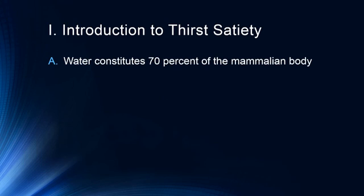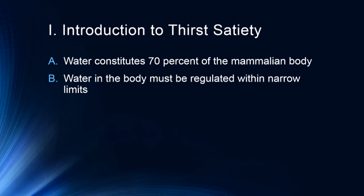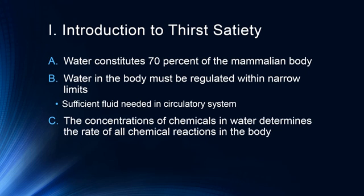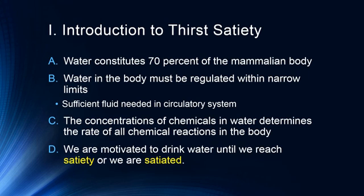Water constitutes about 70% of the mammalian body, so it's very important that we maintain adequate water volume. Water in the body must be regulated within relatively narrow parameters. We need sufficient fluid in the circulatory system to keep things functioning, and we also need the intracellular environment adequately maintained, so it's a particularly important part of our homeostatic system. The concentration of chemicals in water determines the rate of all chemical reactions in the body — how much salt, how many enzymes — all dissolved in our total water volume. We're motivated to drink water until we reach what we call the satiety point.